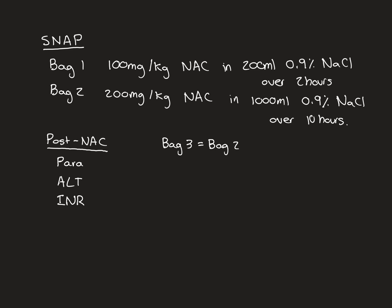Again, you give 200 mg per kg of NAC in a litre of normal saline over 10 hours. After that third bag of NAC, you then do more post-NAC blood tests. Again, it remains the case that if all of these three things are acceptable now after that third bag of NAC, then the patient can be discharged. Whereas if any of them are unacceptable, then you go on to the fourth bag of NAC. The fourth bag of NAC is again a duplicate of bag 2. So 200 mg per kg infused over 10 hours. After that fourth bag of NAC, you then repeat the post-NAC blood tests again.